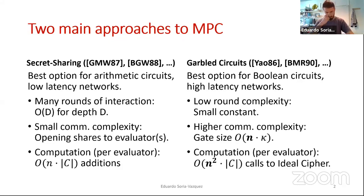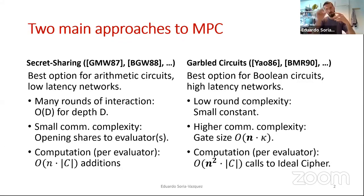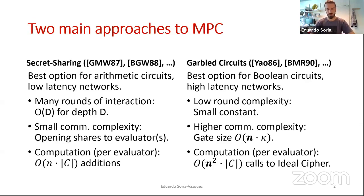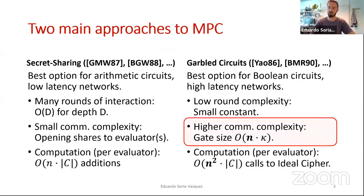Additionally, evaluating these gates is also going to depend on the number of parties. If you were paying attention to Karsten's talk, you have these four rows now divided into n rows themselves, and each of these n rows is encrypted under all n keys of the parties. This gives you a quadratic overhead in the number of parties when you want to evaluate these gates.